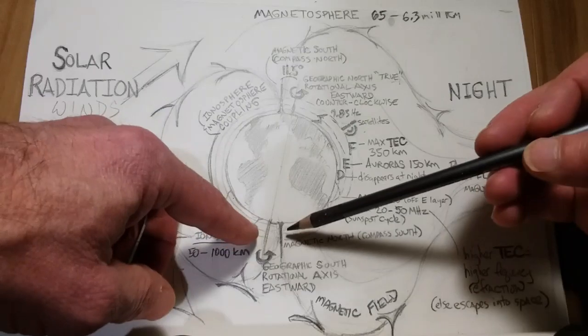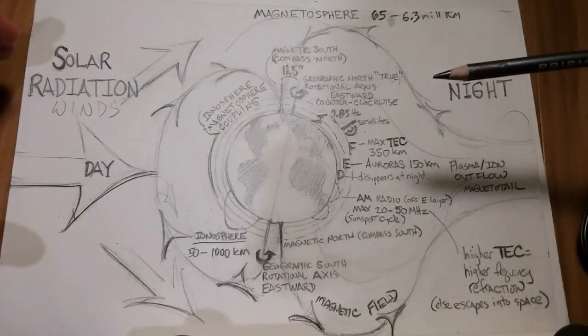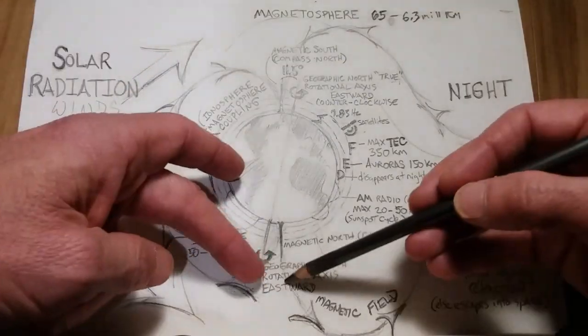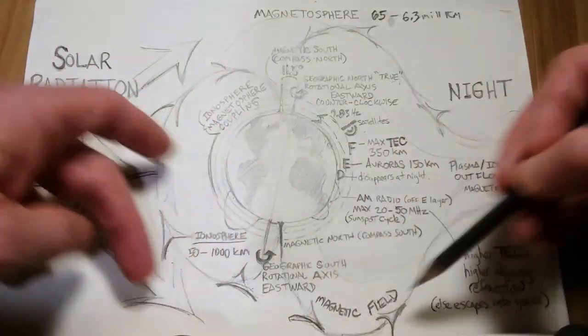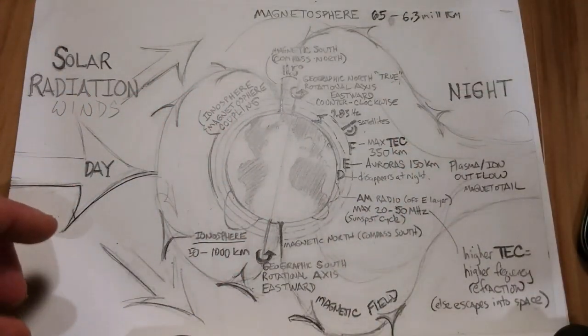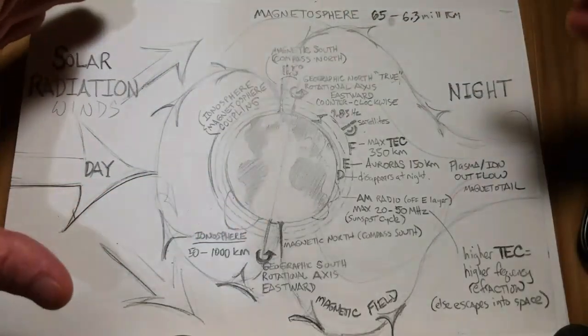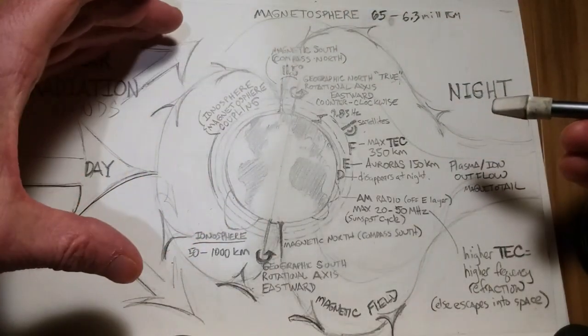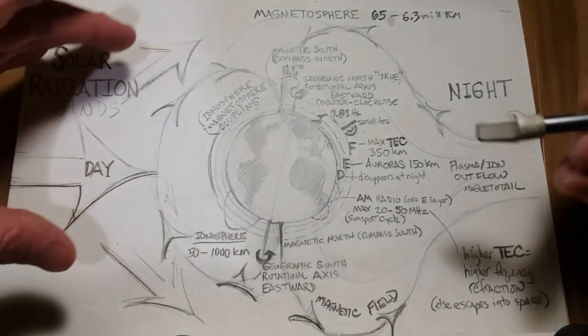And if you notice here, in like a vacuum, where there would be no solar winds bombarding Earth, these lines would go like this, in this kind of orb, or this dipole configuration, when, in fact, what happens is, as solar radiation bombards the magnetosphere, and as mentioned before, the total electron count greatly affects the ionosphere,